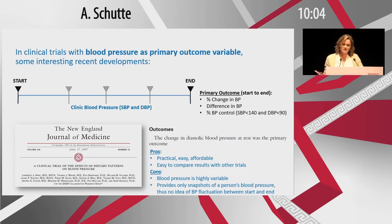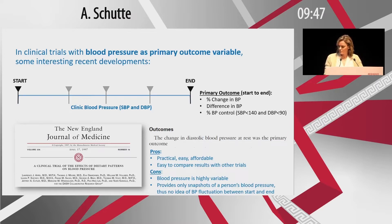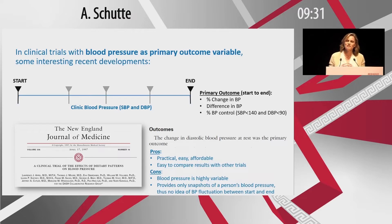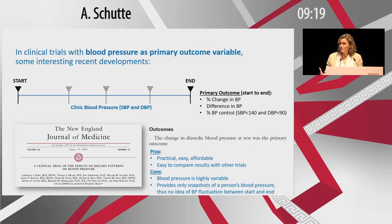The cons have been described in the previous talk. It's highly variable and provides only snapshots — there are so many things that can go wrong. It's remarkable that trials using clinic blood pressure have shown such clear outcomes. But they are snapshots, so we have no idea what changes and fluctuations occurred between the start and end. Blood pressure captures immense information with prognostic value, like blood pressure variability, but it's not implemented in primary care, and it's not practical to incorporate at this stage.